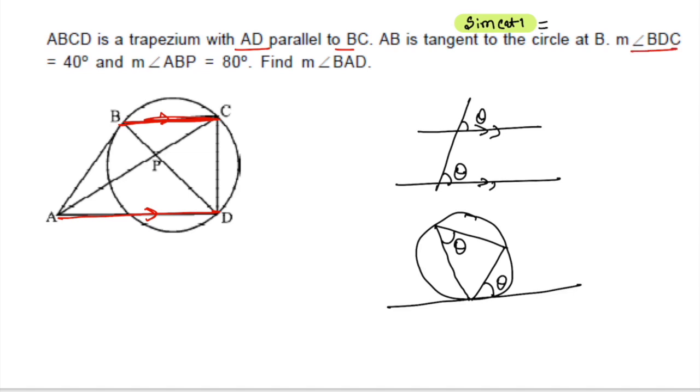Now, angle BDC is nothing but 40 degrees. BDC 40 degrees. Now, you can see BDC. We have B and C are the secant, which is the perimeter of 40. And I know AB is a tangent, so I extend it.